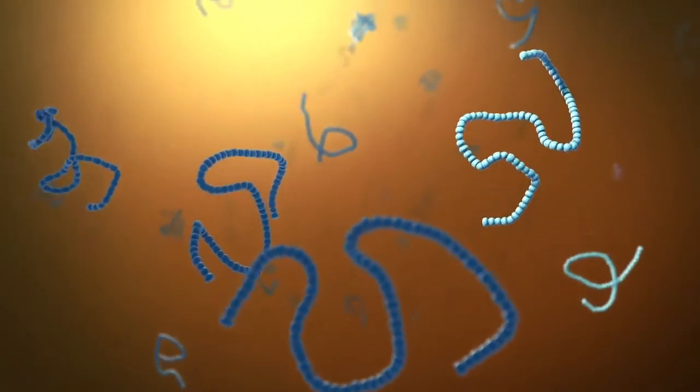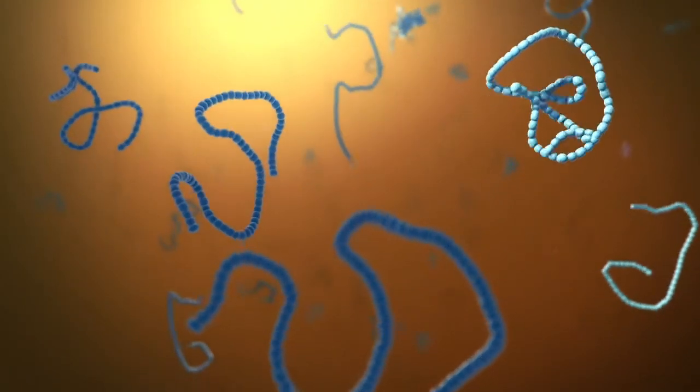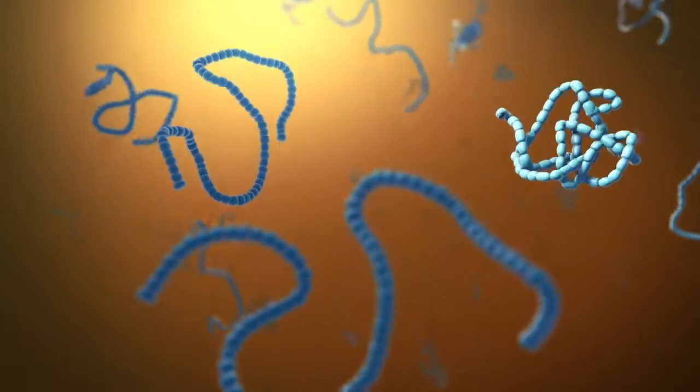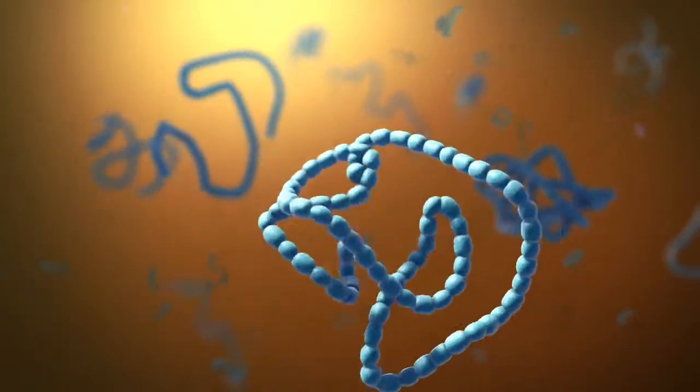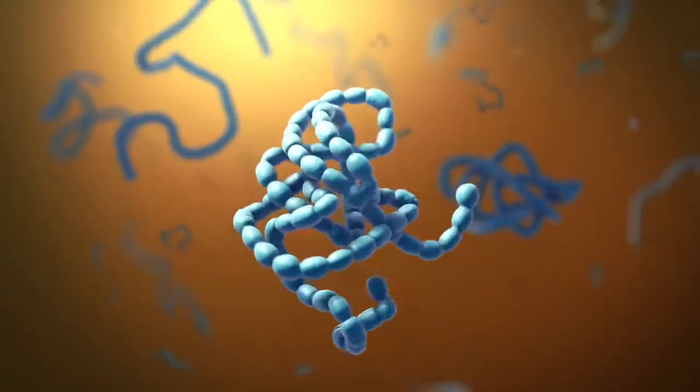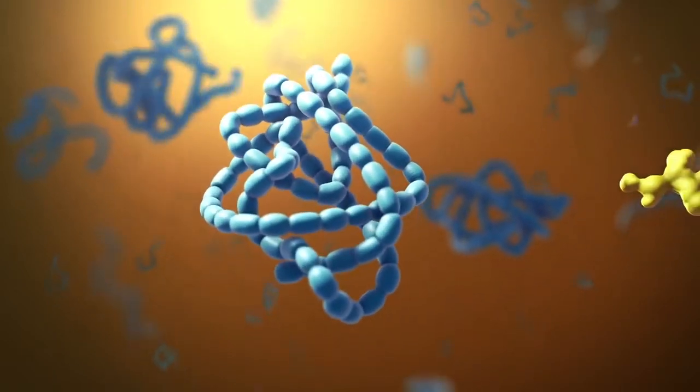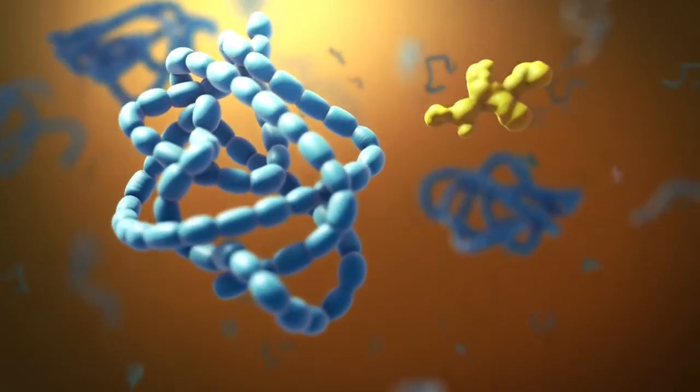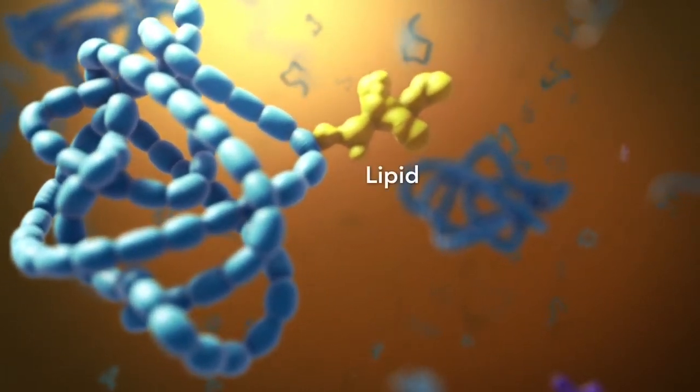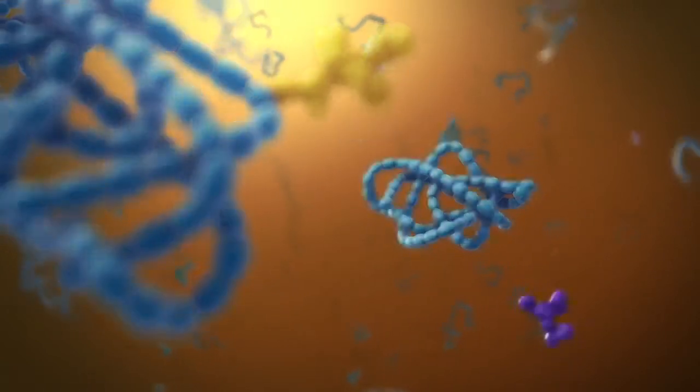As proteins move through the Golgi body, they're customized into forms that the cell can use. The Golgi body does this by folding the proteins into usable shapes or adding other materials onto them, such as lipids or carbohydrates.